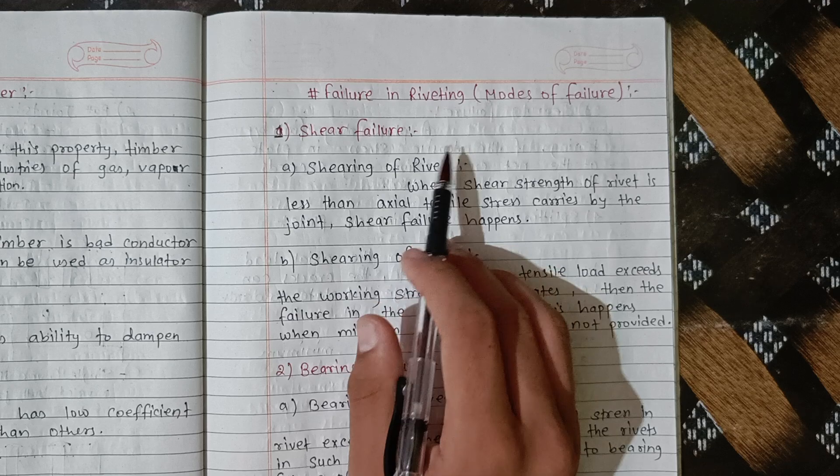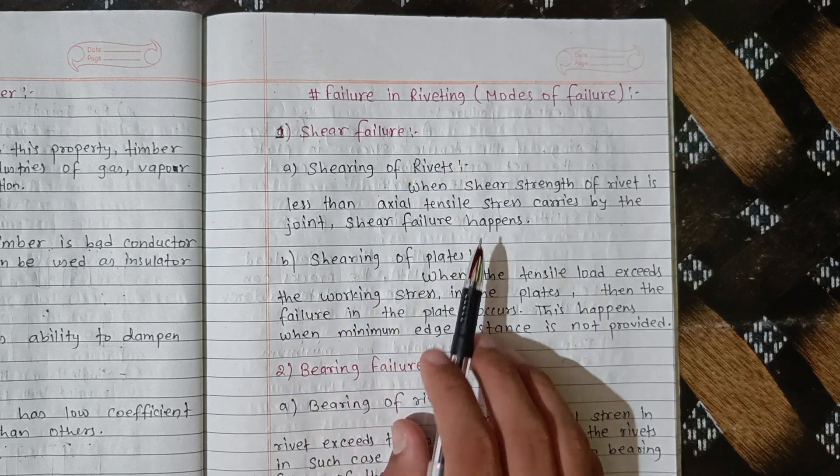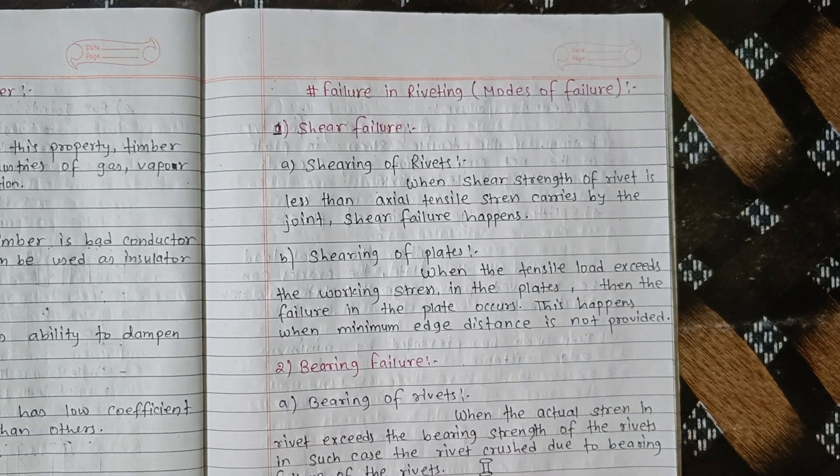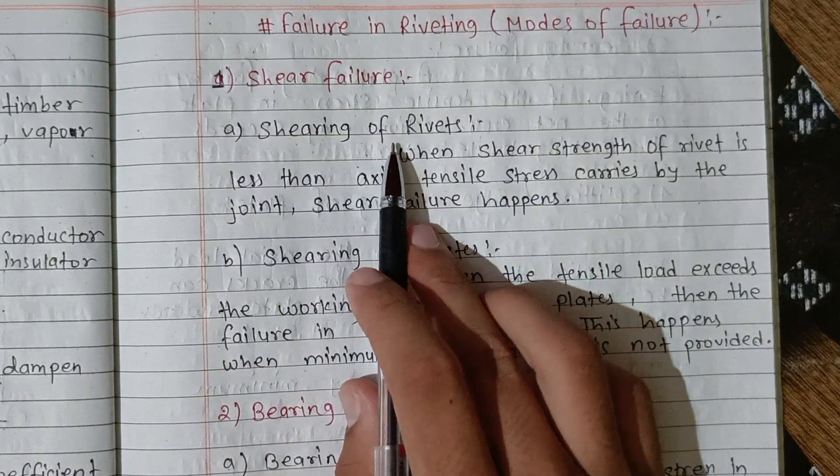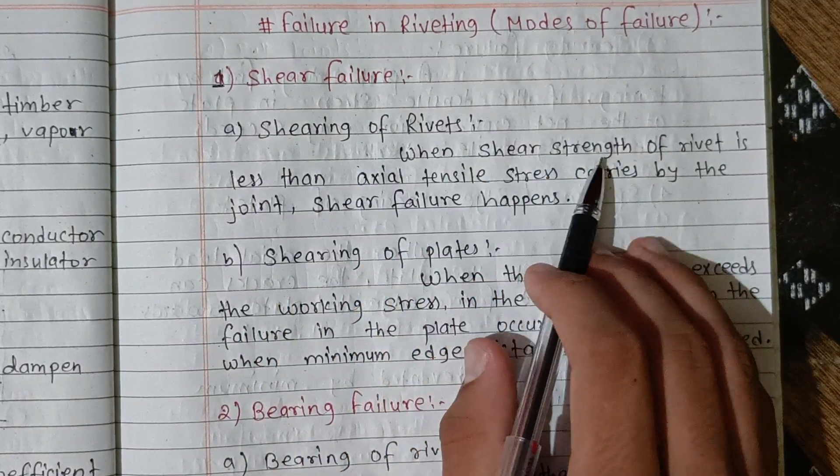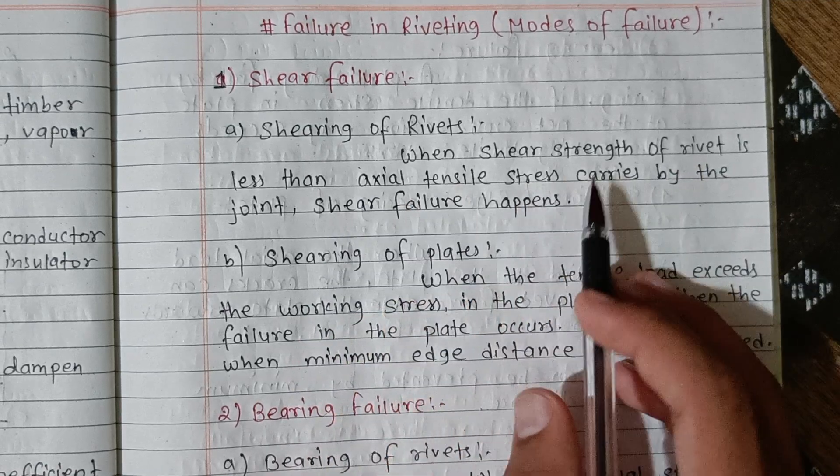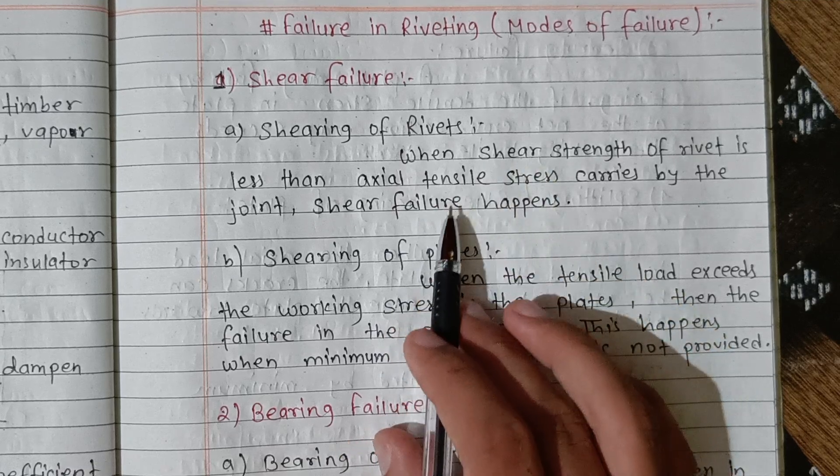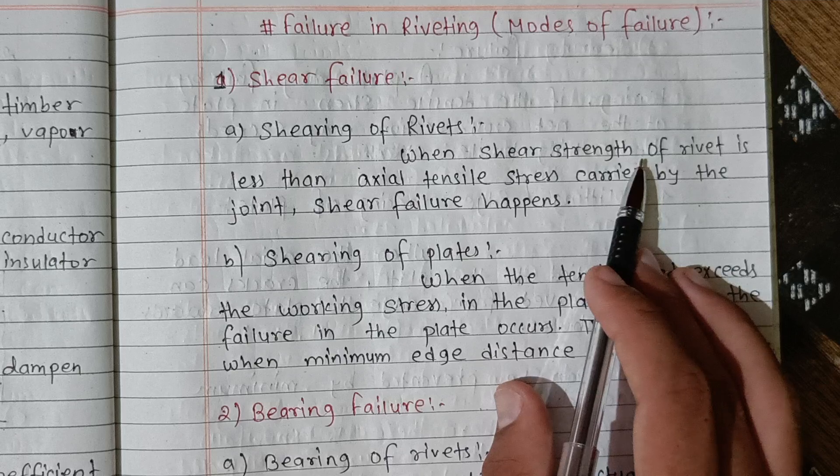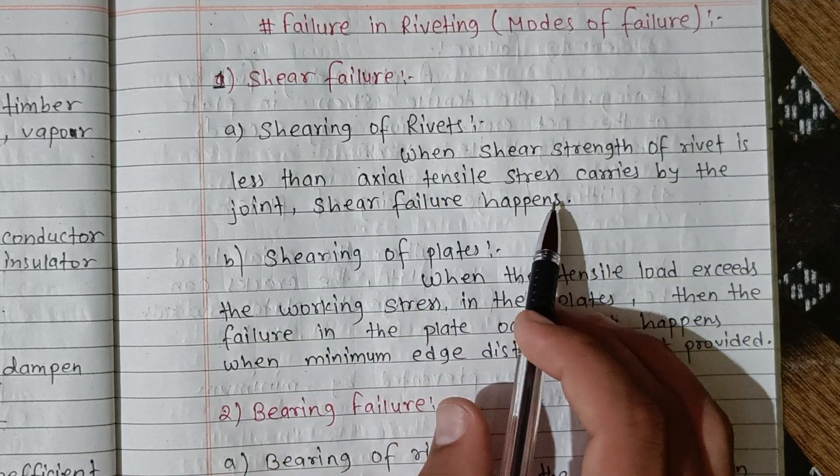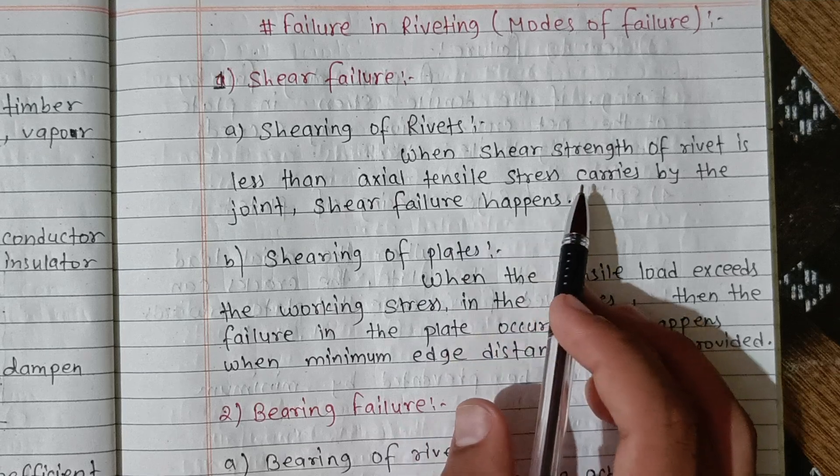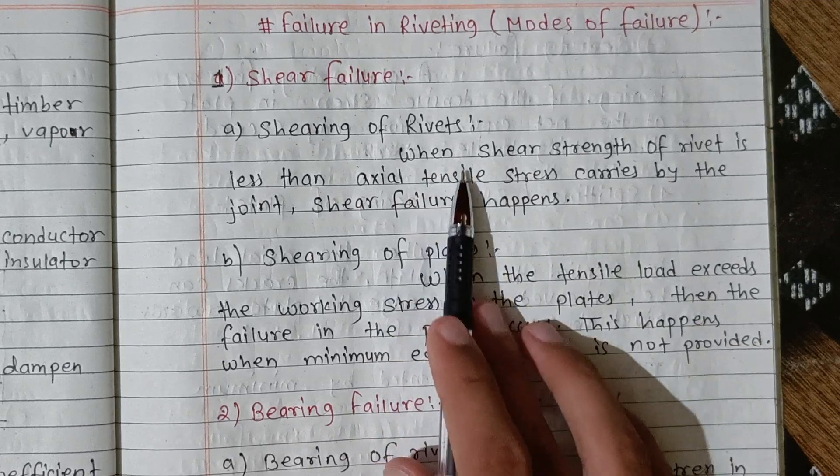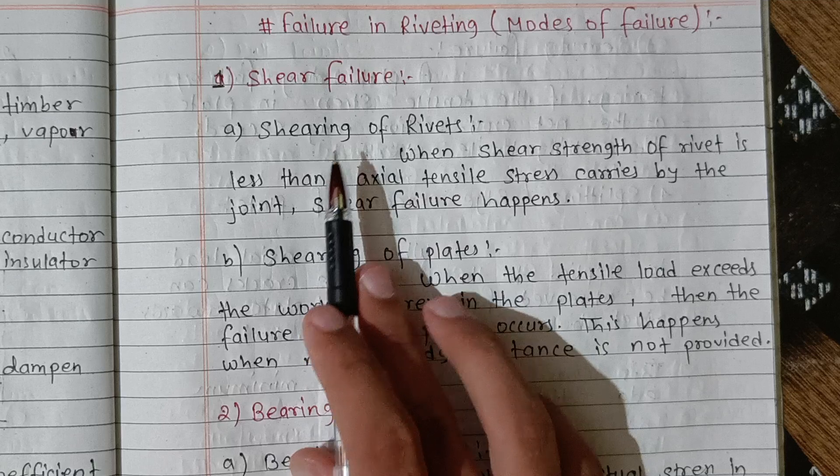Shear failure is the shearing of rivet and shearing of plate. When the shear strength of rivet is less than axial tensile stress carried by the joint, shear failure happens. The body is the shear strength versus axial tensile stress.